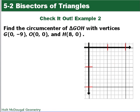Now you will find the circumcenter of triangle GOH using the given points. Graph the triangle, find your two perpendicular bisectors, and see where they intersect.